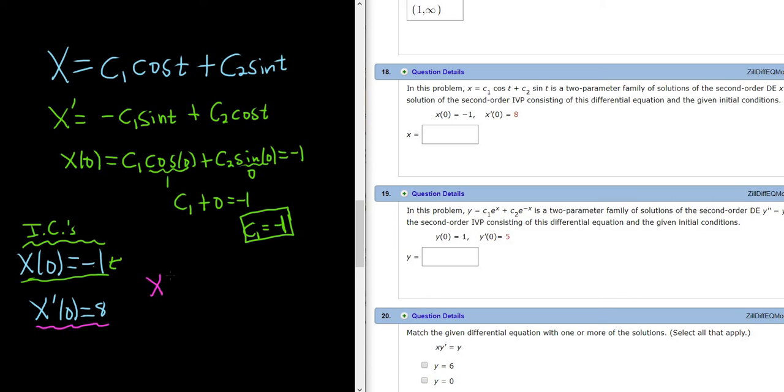So x prime of 0. Now we're looking at x prime. So this is negative c1 sine 0 plus c2 cosine 0, and that's equal to 8. Sine of 0 is 0, so this piece goes away. So we get 0 plus c2 times cosine of 0, which is 1, and that's equal to 8. So c2 is equal to 8.